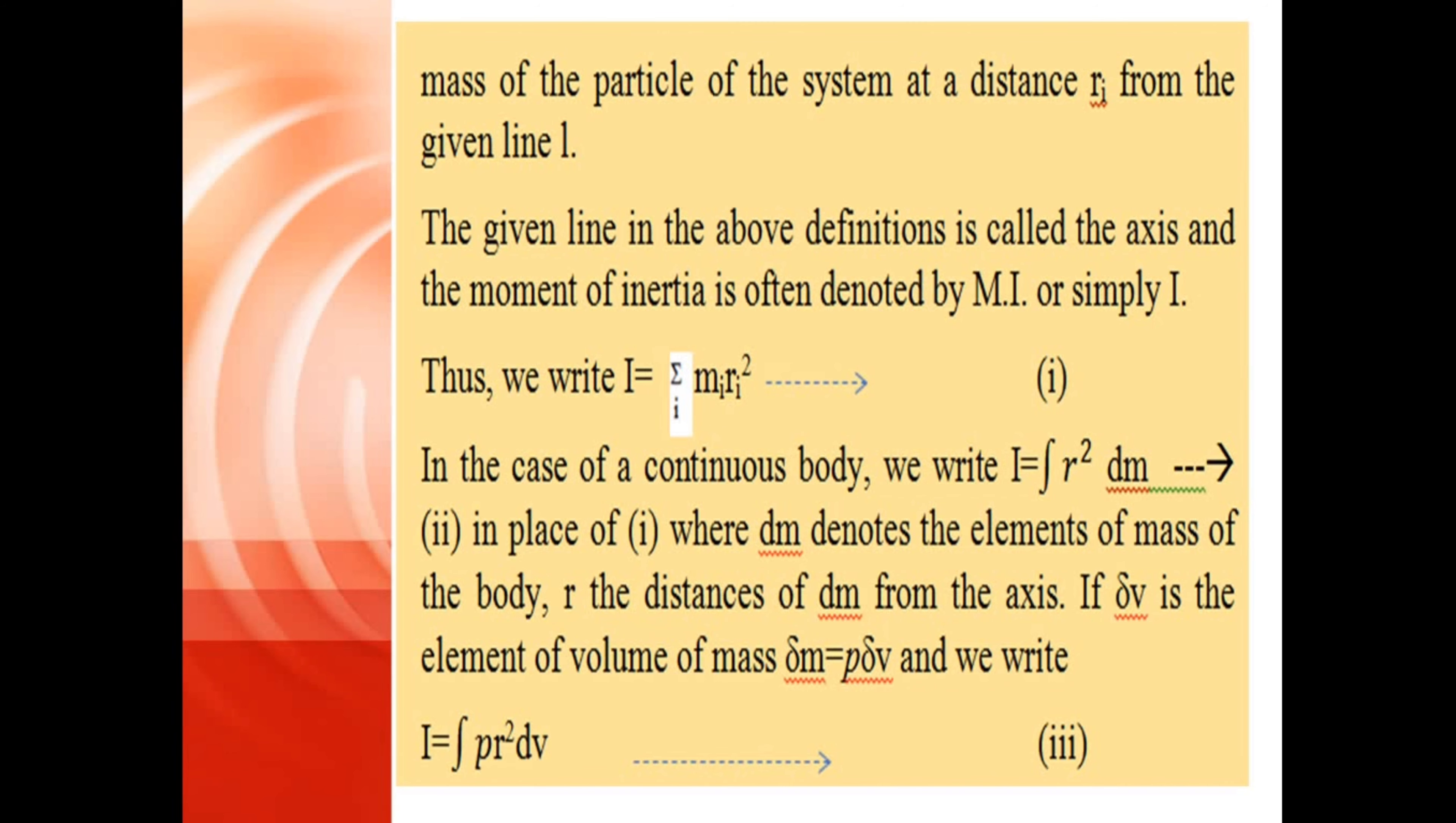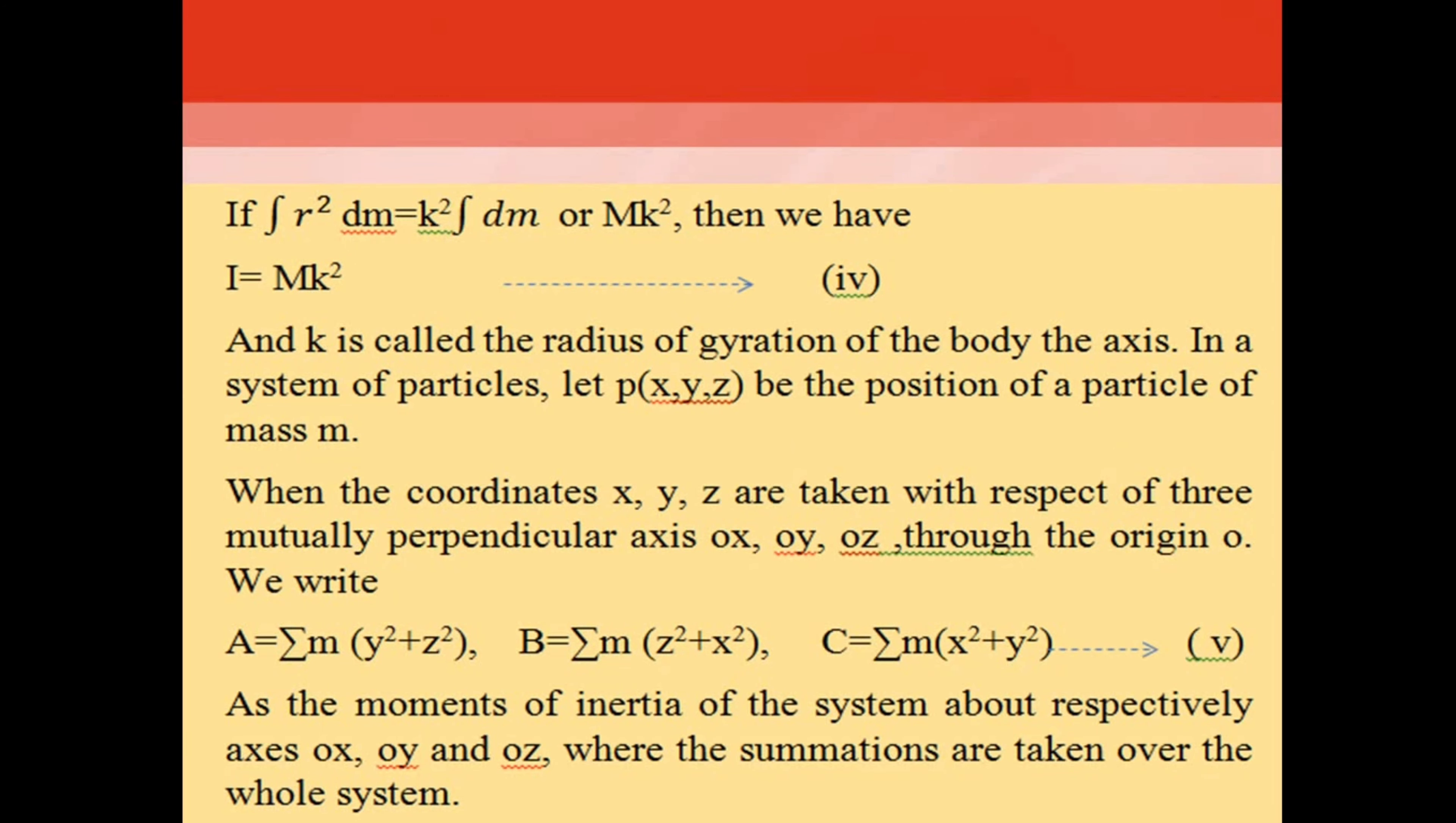If ∫r²dm = k²Mk², then we have I = Mk², equation (iv). And k is called the radius of gyration of the body about the axis.